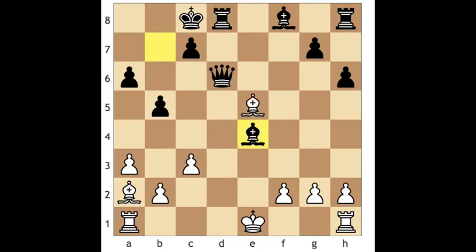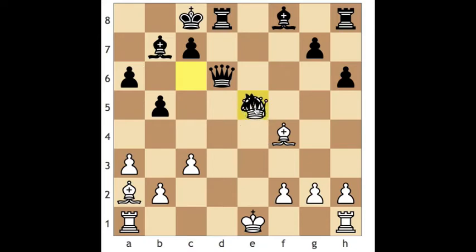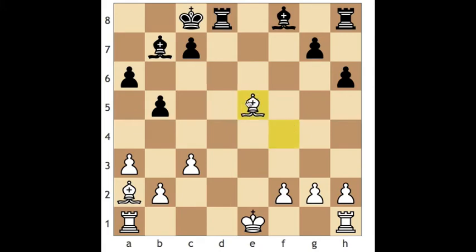Let's go back and see what would have happened if I had taken with the queen. So now it's his option whether or not he wants to accept a queen exchange or potentially decline. Let's just say he exchanges — he takes, I take. Material is essentially equal and I would have had maybe a decent game compared to what I had when I took with the bishop.